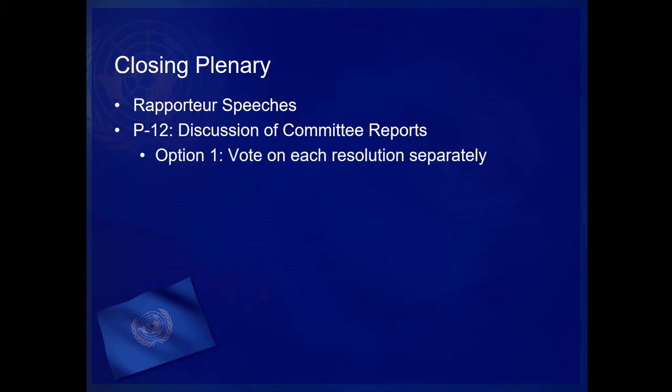Option 1 permits the General Assembly to vote on each of the resolutions separately with discussion. If this option is proposed, it is put to an immediate vote and requires a simple majority to pass. If the motion passes, the General Assembly considers each resolution in order. Debate alternates between sides with one speaker in support of the resolution followed by a speaker against the resolution. After each presentation, the General Assembly votes on the individual resolutions until all resolutions approved by the committee have been voted on by the General Assembly. This is obviously a time-consuming option and rarely done at conference.